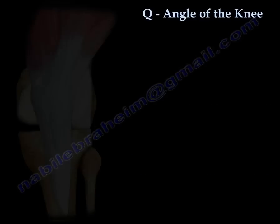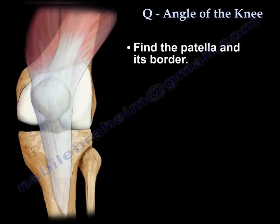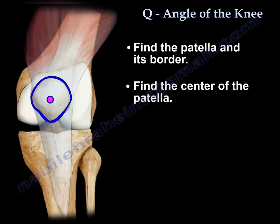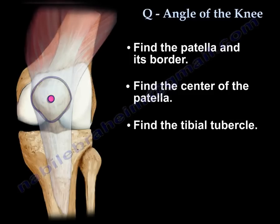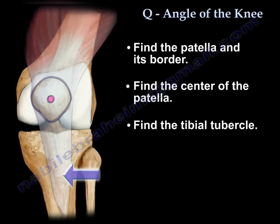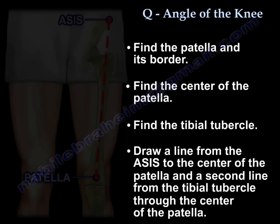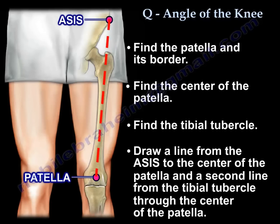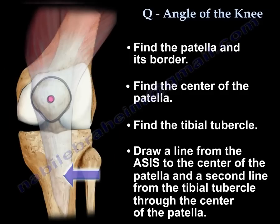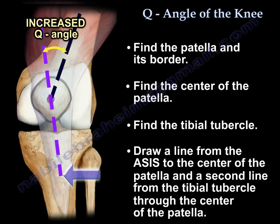To measure the Q-Angle: find the patella and its border, then find the center of the patella, and find the tibial tubercle. Draw a line from the ASIS — anterior superior iliac spine — to the center of the patella, and the second line from the tibial tubercle through the center of the patella.